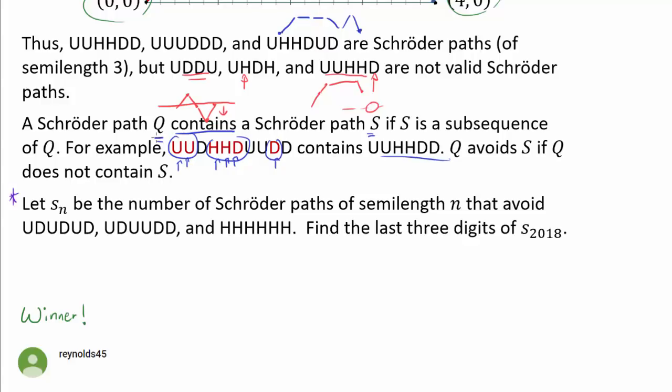Q avoids S if Q does not contain S. And here is the final question. Let S_n be the number of Schröder paths of semi-length n that avoid UDUDUD, UDUUDD, and HHHHHH. So we have three conditions. Find the last three digits of, of course, S_2018.